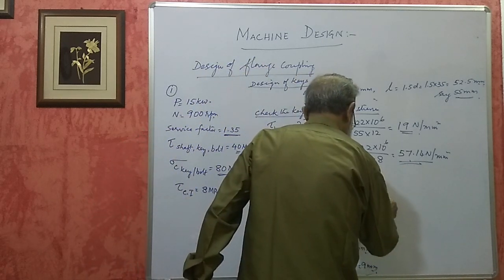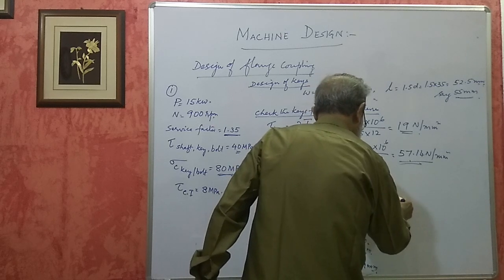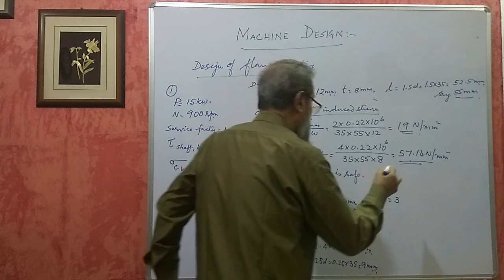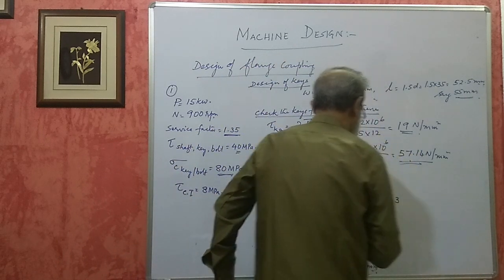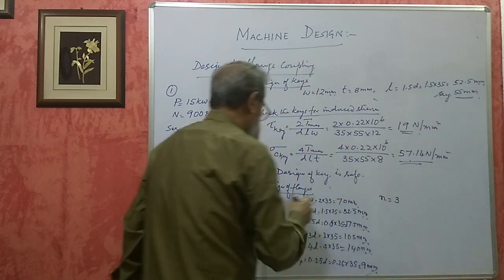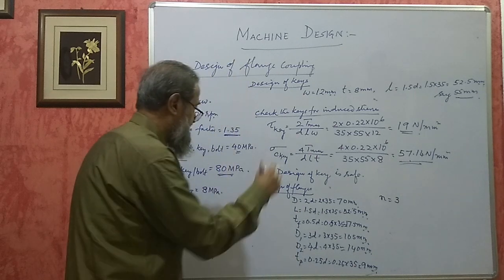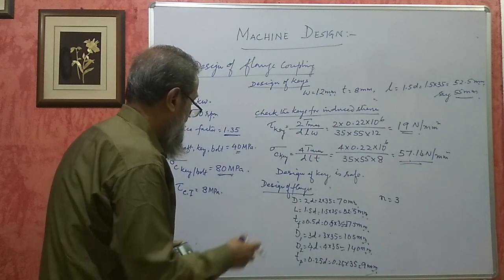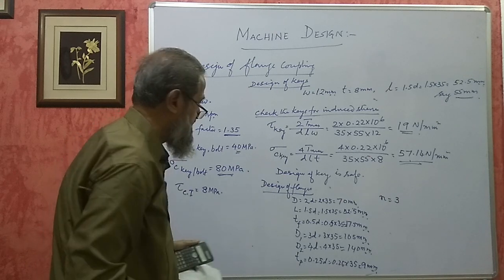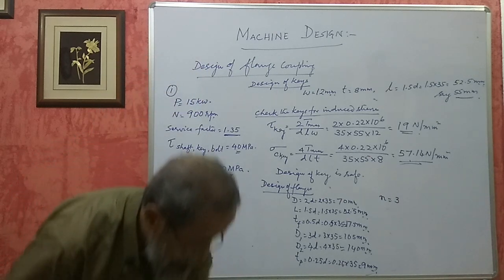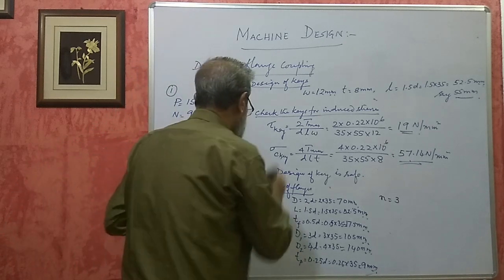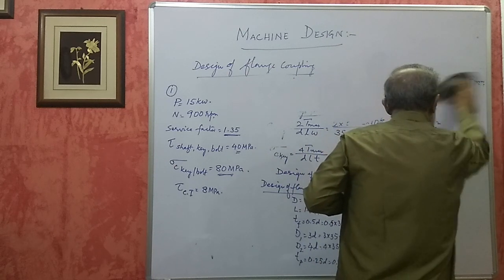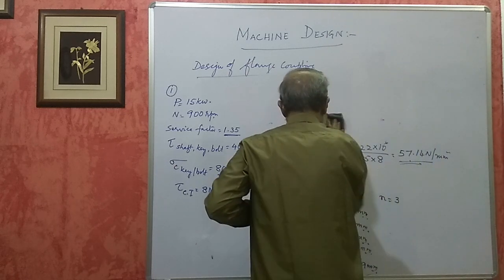Number of bolts n will be equal to 3, because the diameter of the shaft is 35 mm which is less than 40 mm, so number of bolts is 3. All these dimensions you have got. Now check for induced stresses in the hub and flange.